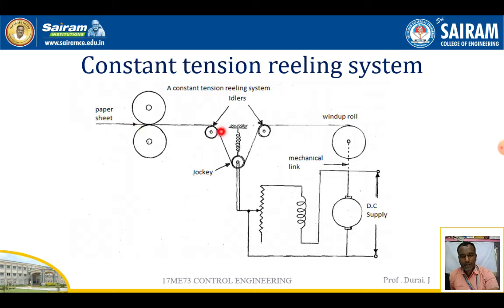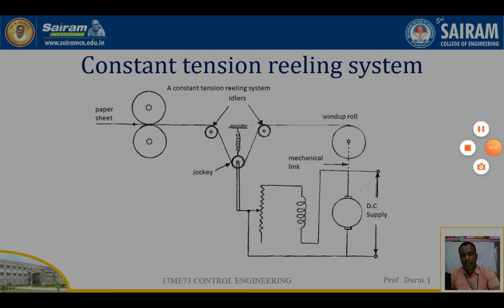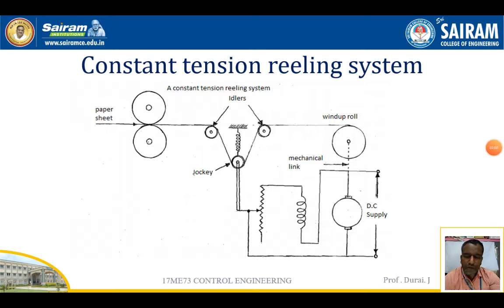The main challenge here is that the paper must come with constant tension. Suppose the tension is less — the roll will be a loose roll. Suppose there is too much tension — the paper will tear. So we have to maintain constant tension of the paper. The item used for this purpose is the jockey, which is the key point to remember.